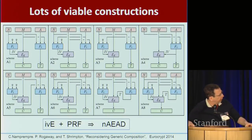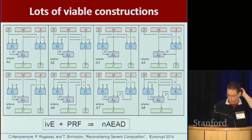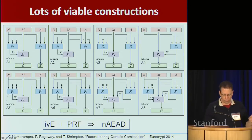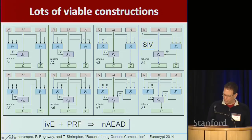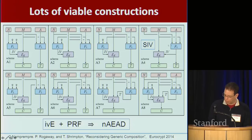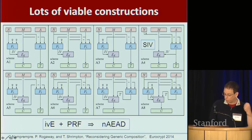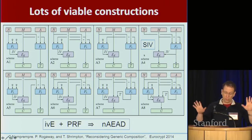There are lots of ways to build authenticated encryption. I just want to show a picture from a paper by Namprempre, Rogaway, and Shrimpton that shows a whole bunch of constructions. I wanted to quickly mention the SIV method: you encrypt your message, but the randomness — the IV — is derived as a function of the nonce, the message, and the associated data. That's why you see the ciphertext and the tag coming out. This is a mode that's actually nonce misuse resistant: even if you encrypt using the same nonce but with different messages, you get different IVs and the mode still provides security.